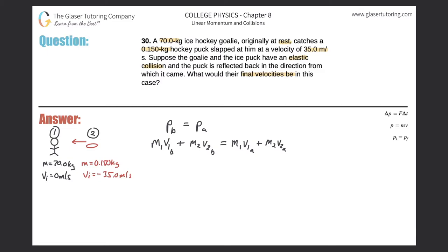Here is the relative velocity formula for elastic collisions. It says that the velocity of the first object before the collision minus the velocity of the second object before the collision equals the velocity of the second object after the collision minus the velocity of the first object after the collision. This is only valid for elastic collisions. We know the velocities before the collision, so the only unknowns are the two post-collision velocities.